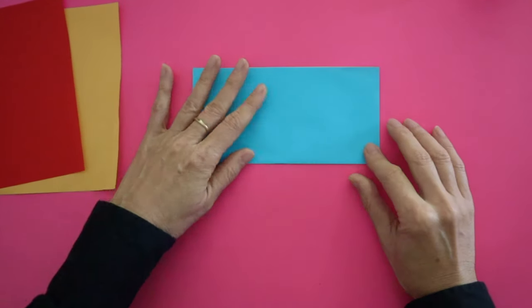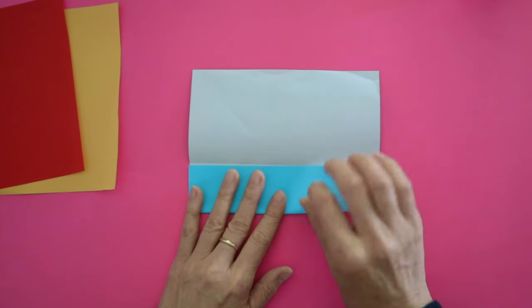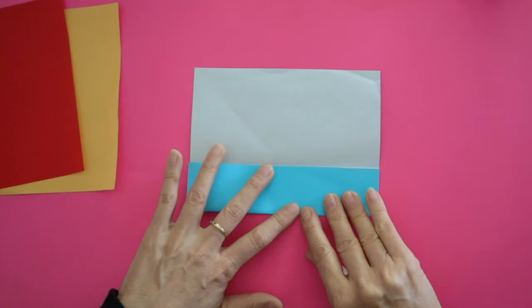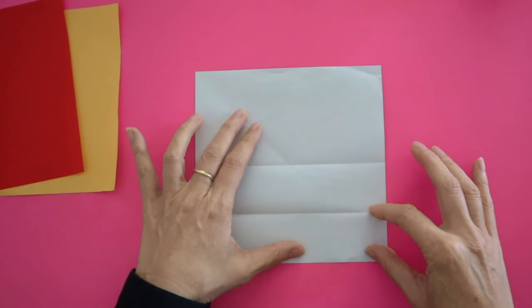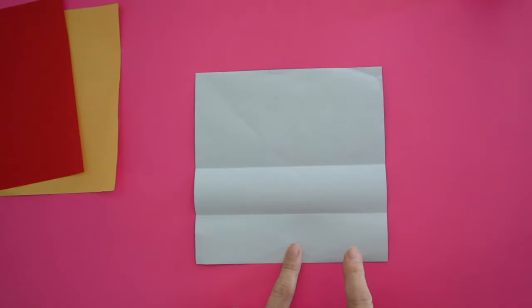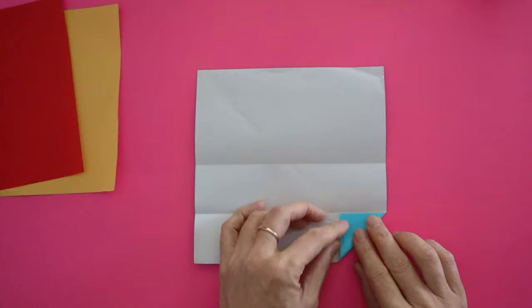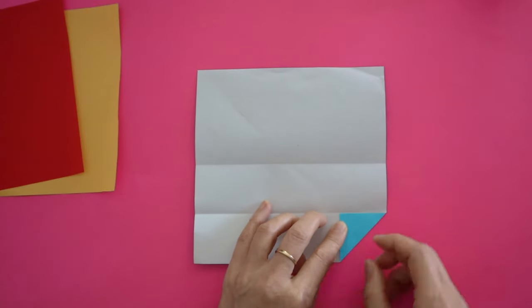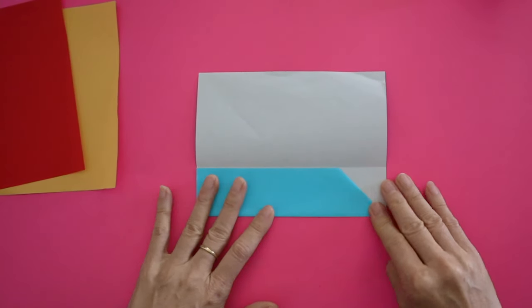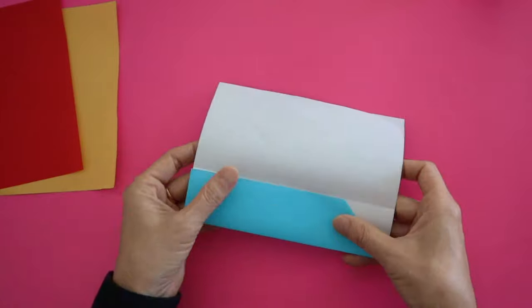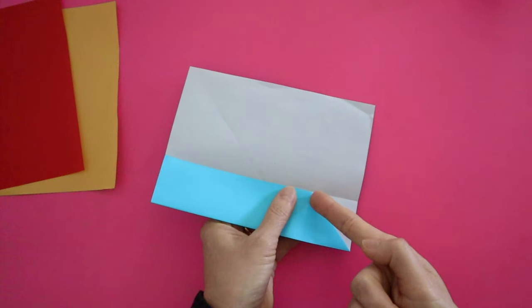The first step is folding it into a rectangle and unfolding. Then fold it to the center horizontal crease. From the right bottom corner, fold up to the closest crease and you've made a small triangle. Then fold the bottom part to the original center crease.